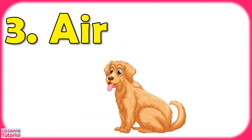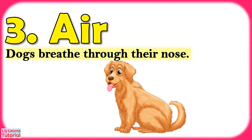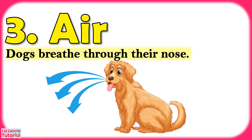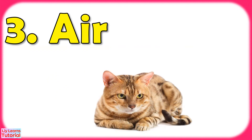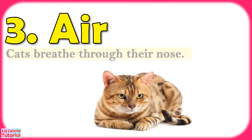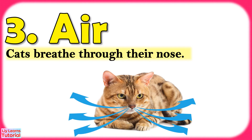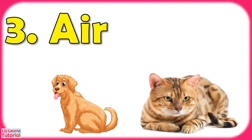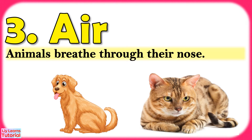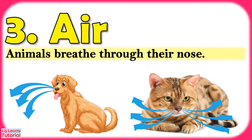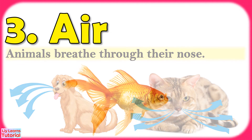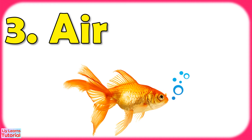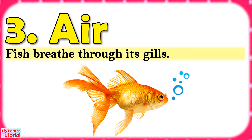Now let's see other animals. Dogs breathe through their nose. Cats also breathe through their nose. So animals breathe through their nose and can also breathe through their mouth. Fish is a living thing, so it also breathes. Fish breathe through its gills — fish have gills to breathe.